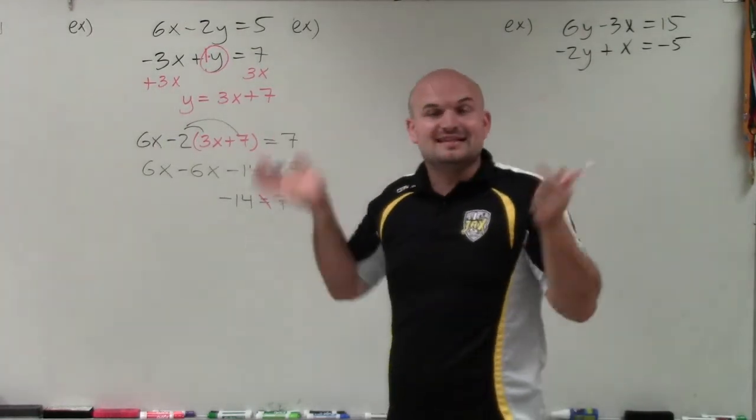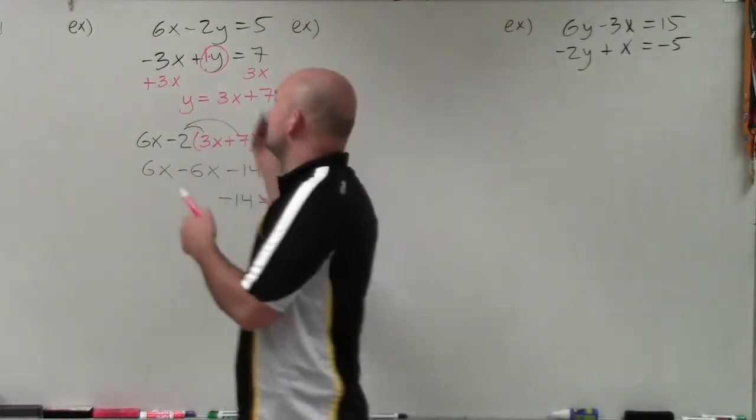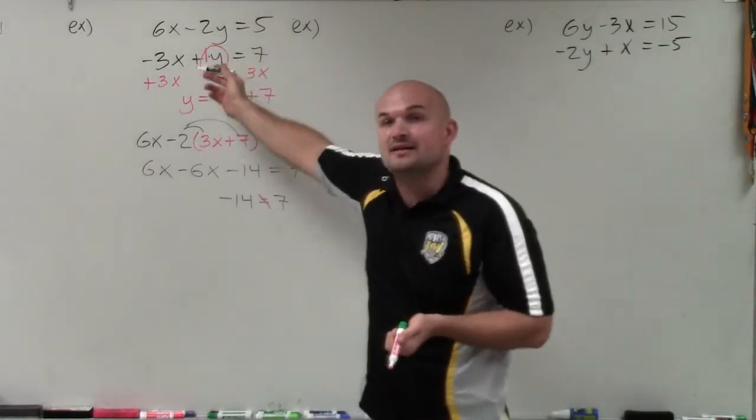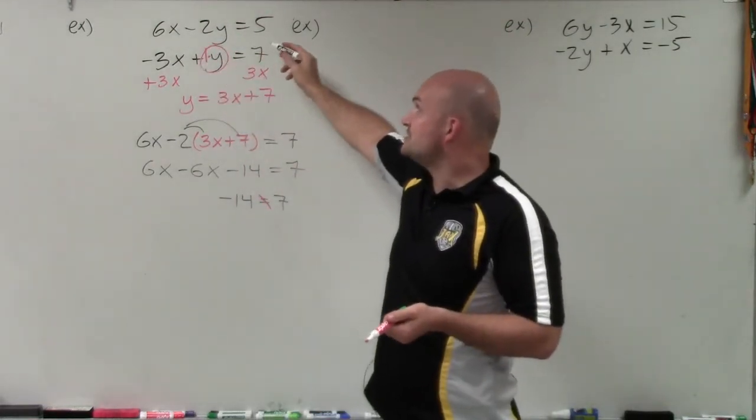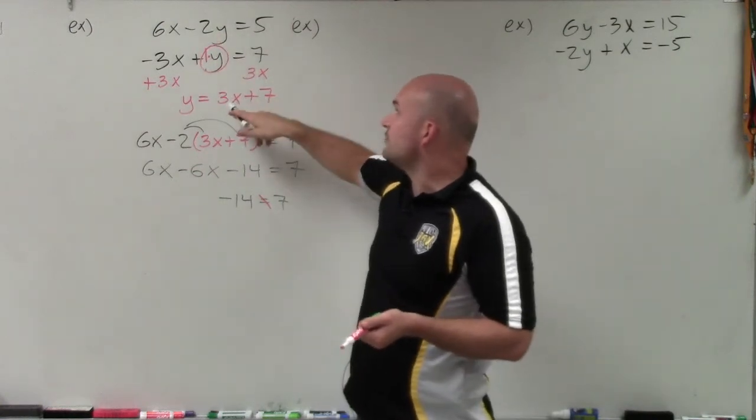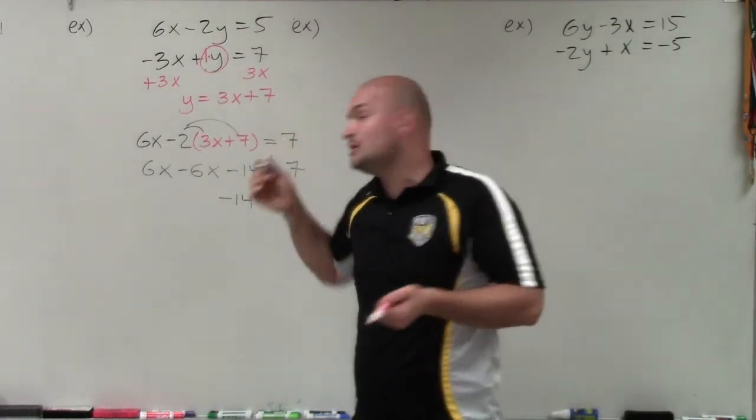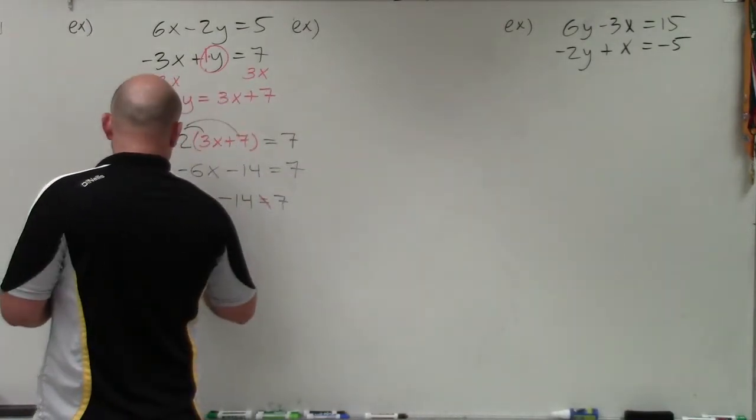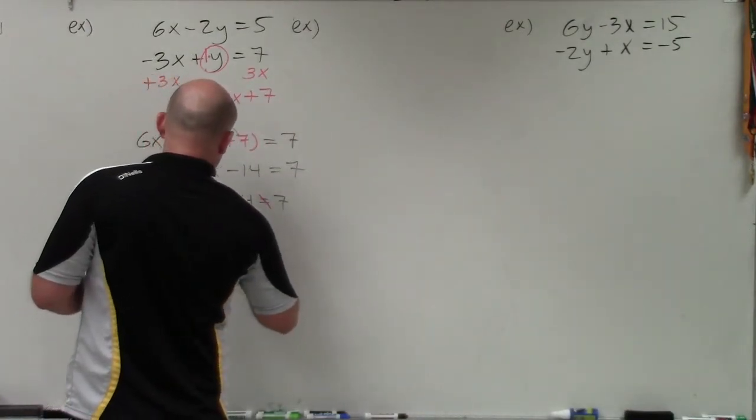No matter what value you plug in for x, these two lines are never going to intersect. And you could verify this by rewriting them in slope-intercept form. If I was to write that in slope-intercept form, the slope would still be 3x, so they're parallel lines. So we'll just write no solution.